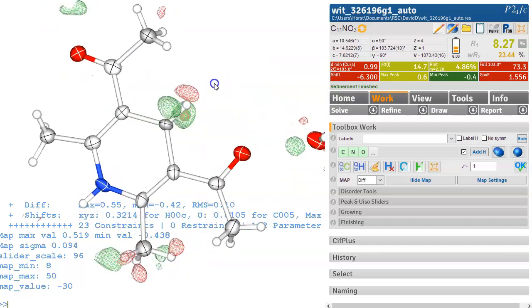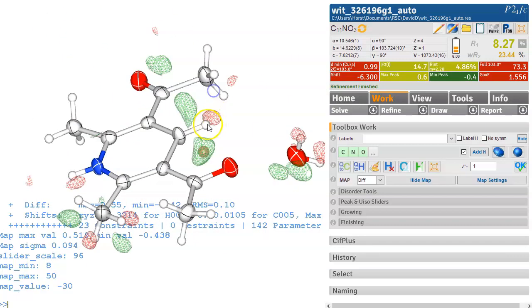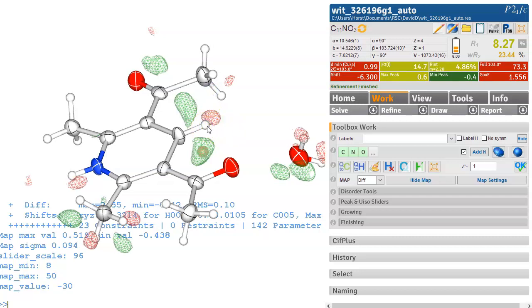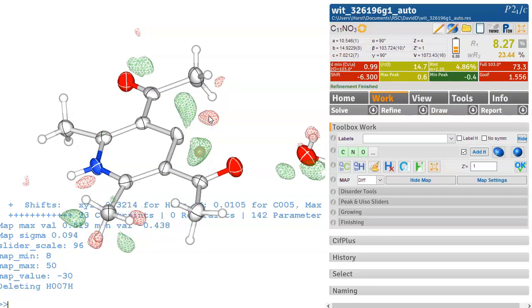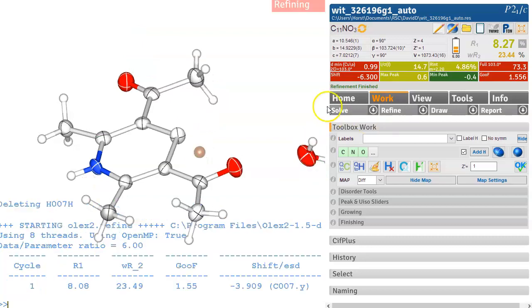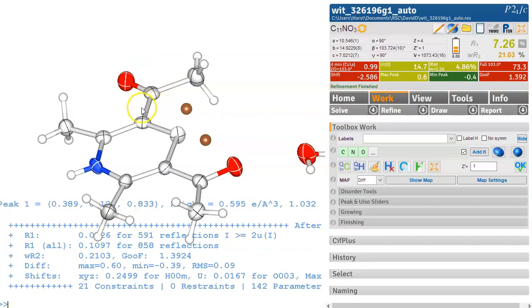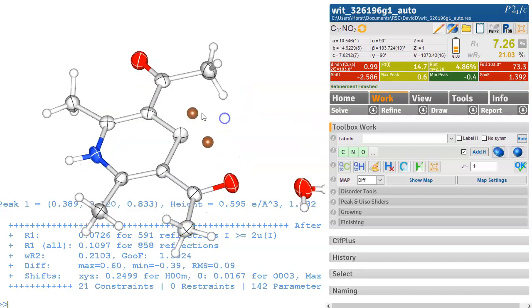So this one here really needs to be different so we can do this in a different way we can first of all delete this one here. One thing you can do of course you can just refine again and then these peaks should come back and these are really prominent now so these two peaks are standing out.